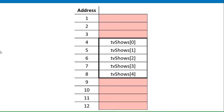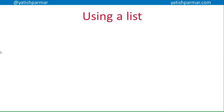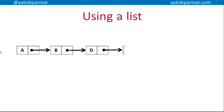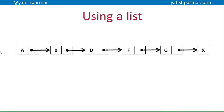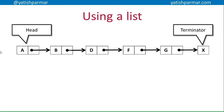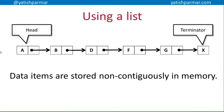We'll come back to that representation in a moment. The new data structure we're learning about today is a linked list. A list looks something like this: each node stores some data, and has a pointer which points to the next node, then the next, and so on. The beginning is called the head node, and at the end you have the terminator.